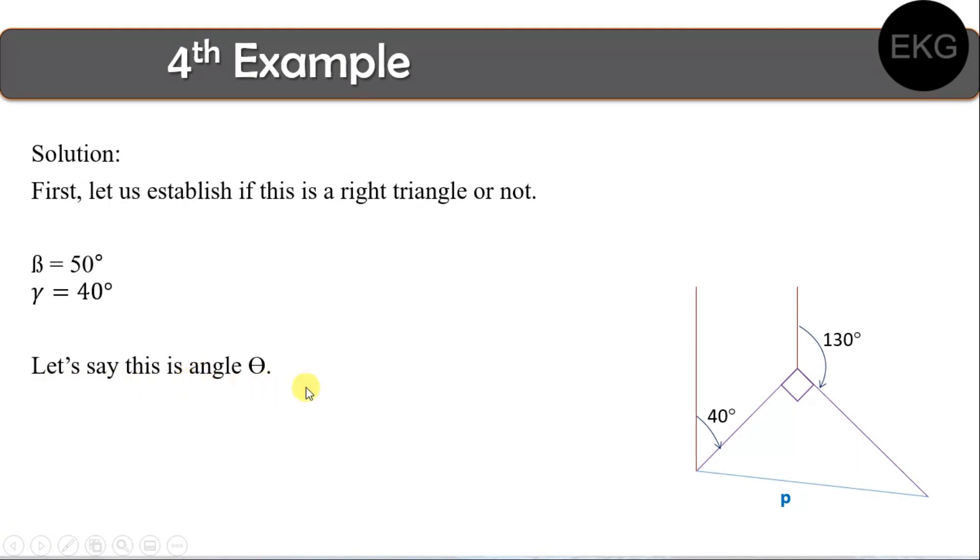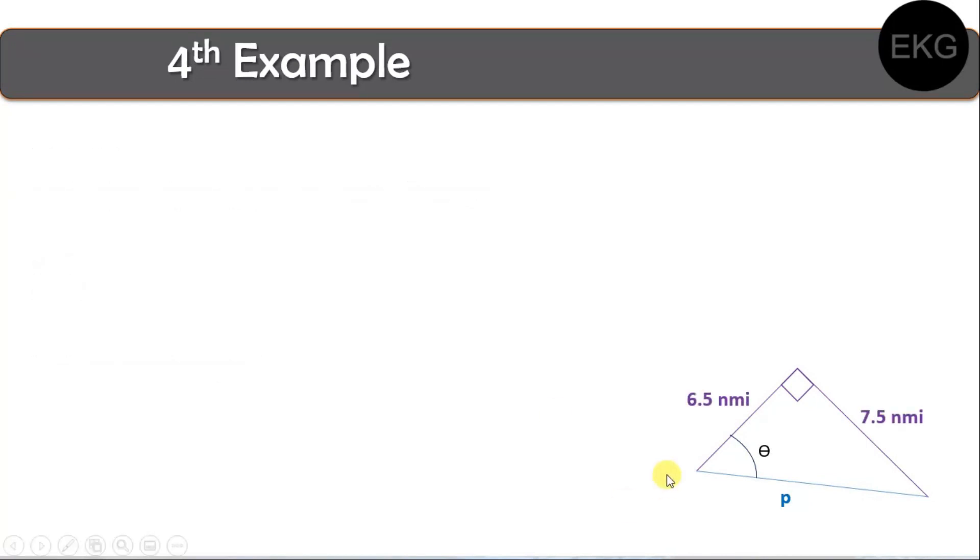Now, let's say this is angle theta. Yan. Itong angle na ito. Now, this angle theta, alam natin that na-travel niya from the origin to this particular point is 6.5 nautical miles. Papunta dito sa kabila is 7.5 nautical miles. So, kung may angle tayo dito, 7.5 nautical miles is kaano-ano ng theta? Is it opposite? Adjacent? Or hypotenuse? How about 6.5 nautical miles? Kaano-ano yan ng theta?